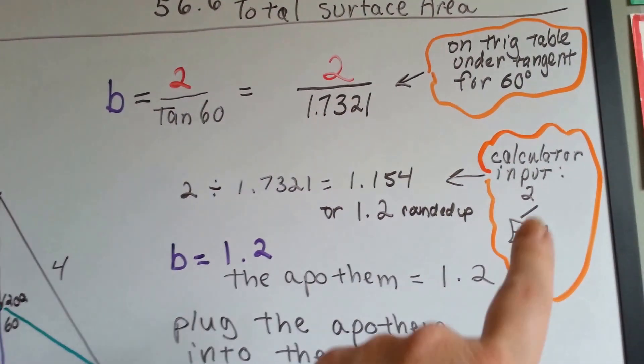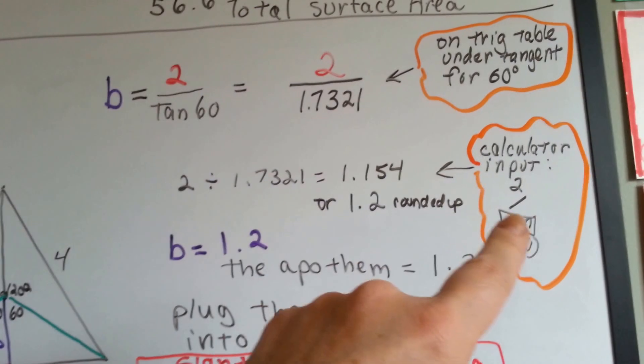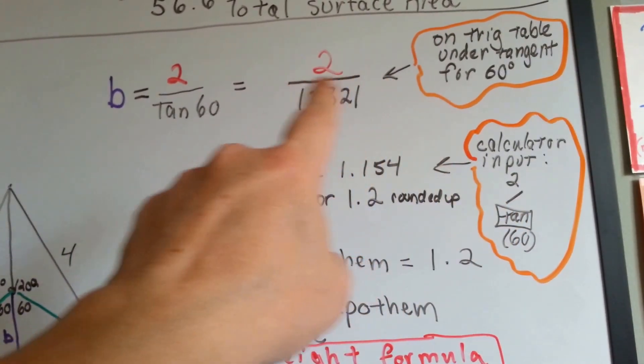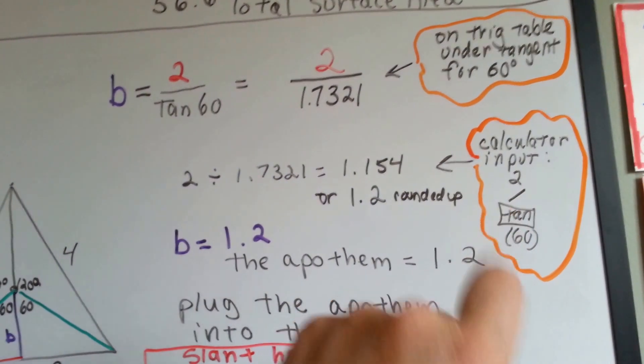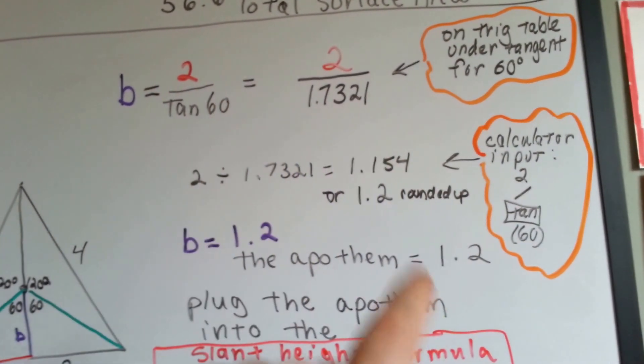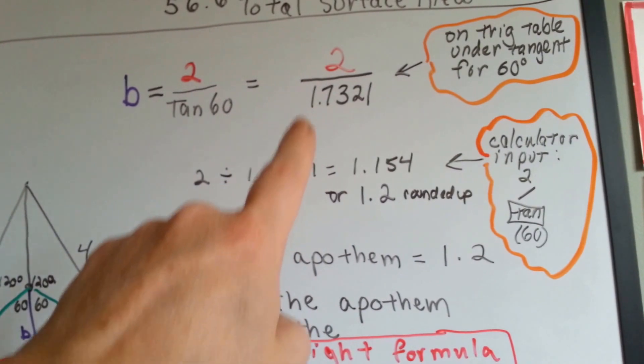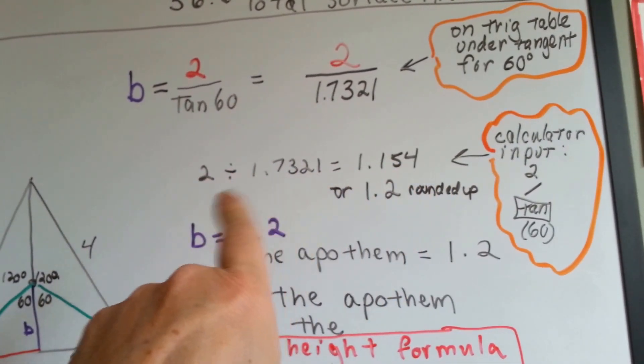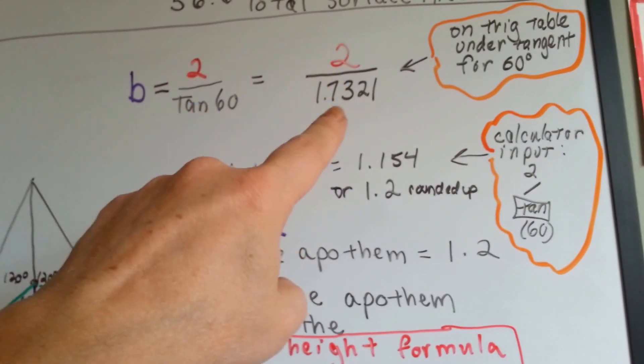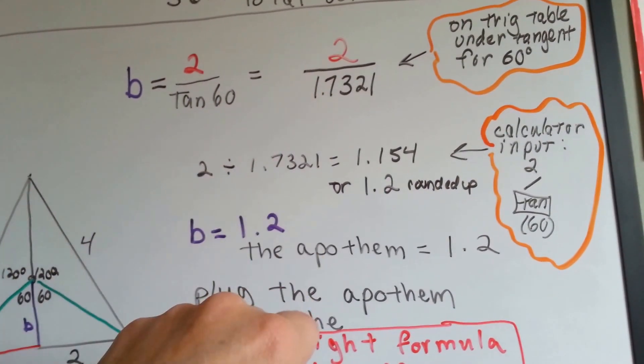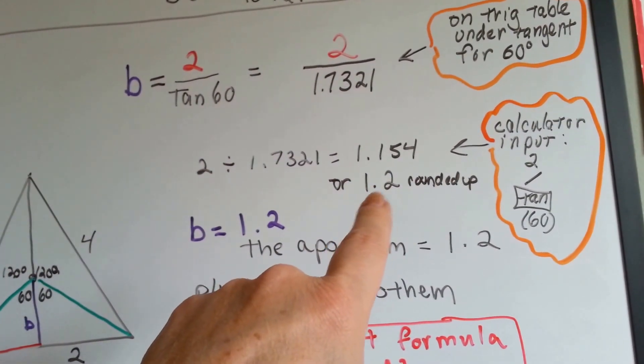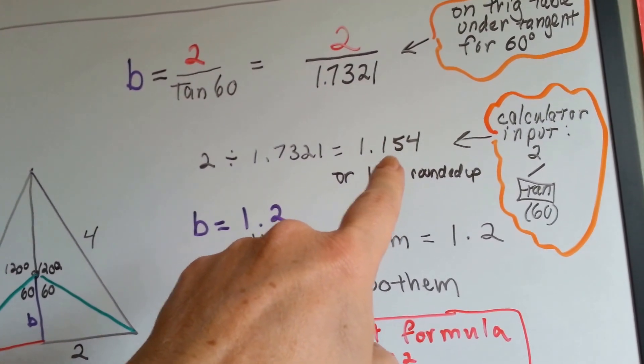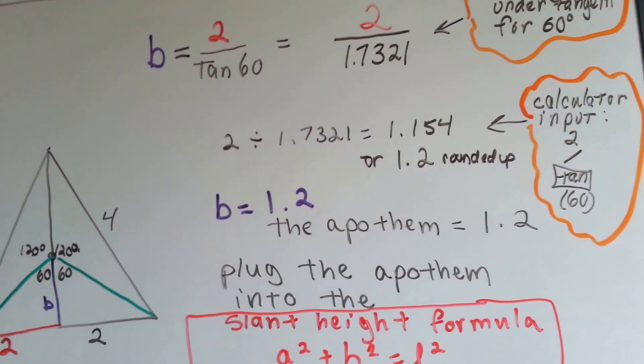If you have a calculator, just input 2 for that 2, a division line for this fraction line, hit the tangent button and put in 60 for that 60. Either way, we're going to come up with 1.154 after we divide the 2 by the 1.7321. Rounding up, I get 1.2 because the 1.5 can round up. The 5 makes the 1 a 2. So we get 1.2.